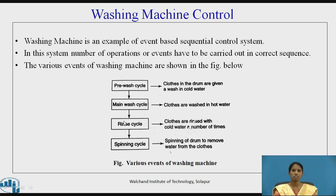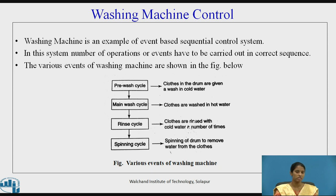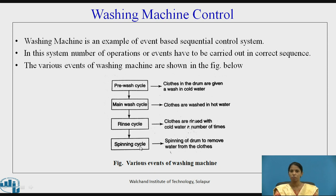The next step is the rinse cycle, in which clothes are rinsed with cold water a number of times. Continuous rotation of the drum in both reverse and forward directions ensures that the clothes are rinsed properly. In the last step — the spinning cycle — the drum rotates at a higher speed than in all three previous steps, because the water has to be removed from the clothes. In this way, automatic sensing of various parameters is done and the washing action is completed.